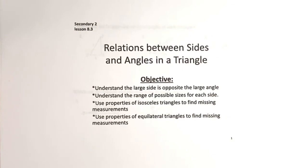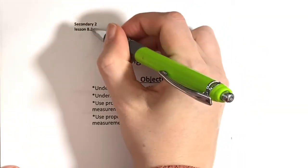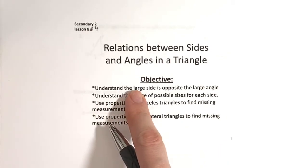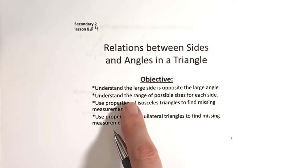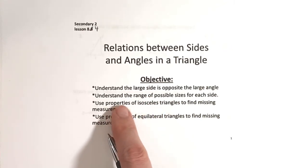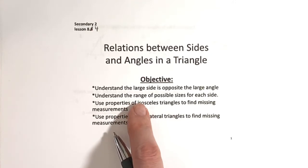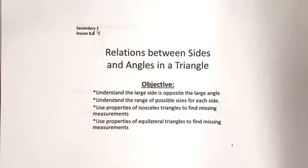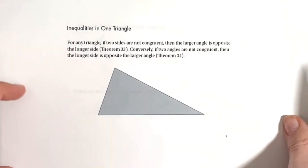Today we're going to do section 8.4 on relations between sides and angles in a triangle. Our objectives are: understanding that the largest side of a triangle is opposite the largest angle, understanding the range of possible sizes for each side, and using properties of isosceles and equilateral triangles to find missing measurements.